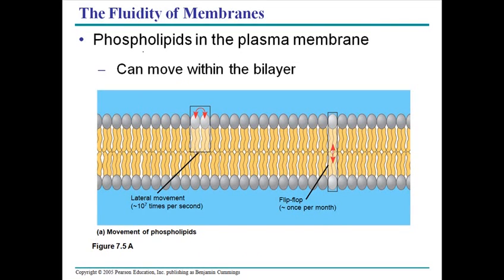Let's talk about the fluidity of the membrane, which is a very common feature of the cell membrane. Fluidity means that the structure of the cell membrane is not fixed — the components are moving all the time from one place to another, in a liquid or semi-liquid state. There are two main types of movement found in phospholipids.